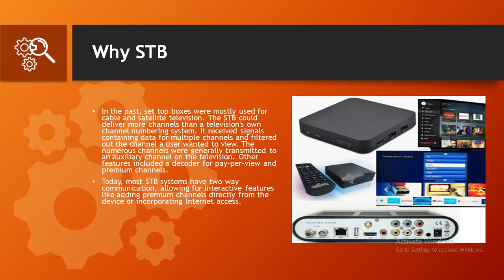In the past, set-top boxes were mostly used for cable and satellite television. The HTV could deliver more channels than a television's own channel numbering system — it received a signal containing data for multiple channels and filtered out the channel a user wanted to view. Other features included a decoder for pay-per-view, which is basically a paid service where you pay to watch content on premium channels. Today, most HTV systems have two-way communication, allowing interactive features like adding premium channels directly from the device or incorporating internet access.